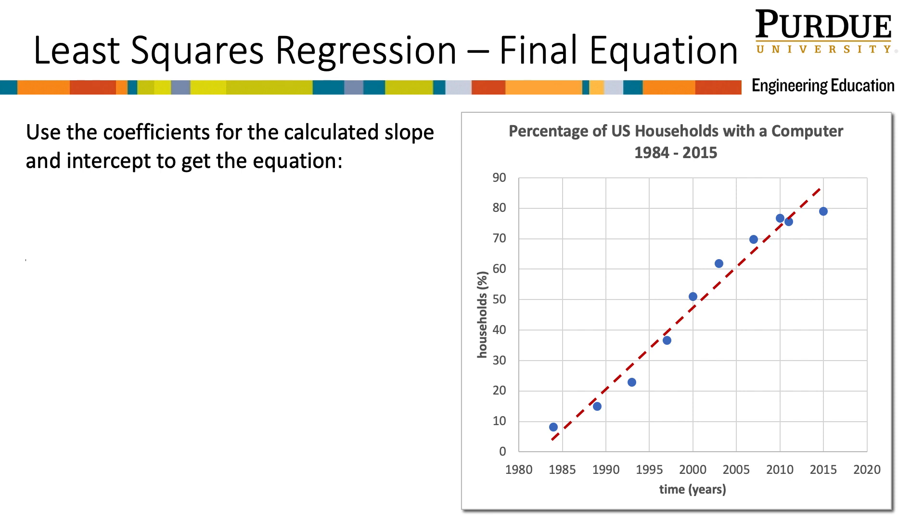Now we plug in the values of the slope and the y-intercept into the equation of the line to get the equation of our modeled line, which gives households equals 2.6 times time minus 5,203.